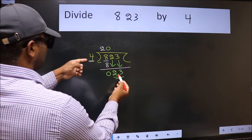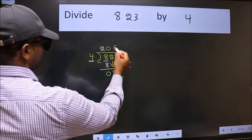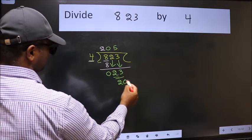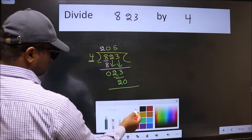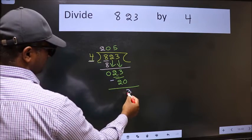A number close to 23 in 4 table is 4 5 20. Now we should subtract. We get 3.